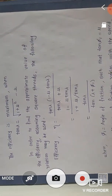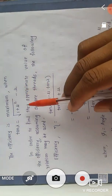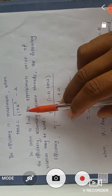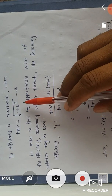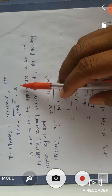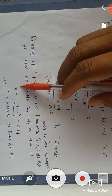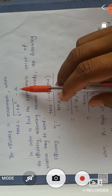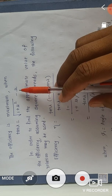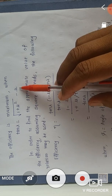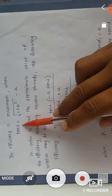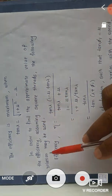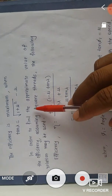The efficiency is maximum when tan λ = √(1 + μ²) − μ, where μ is the coefficient of friction and λ is the lead angle.